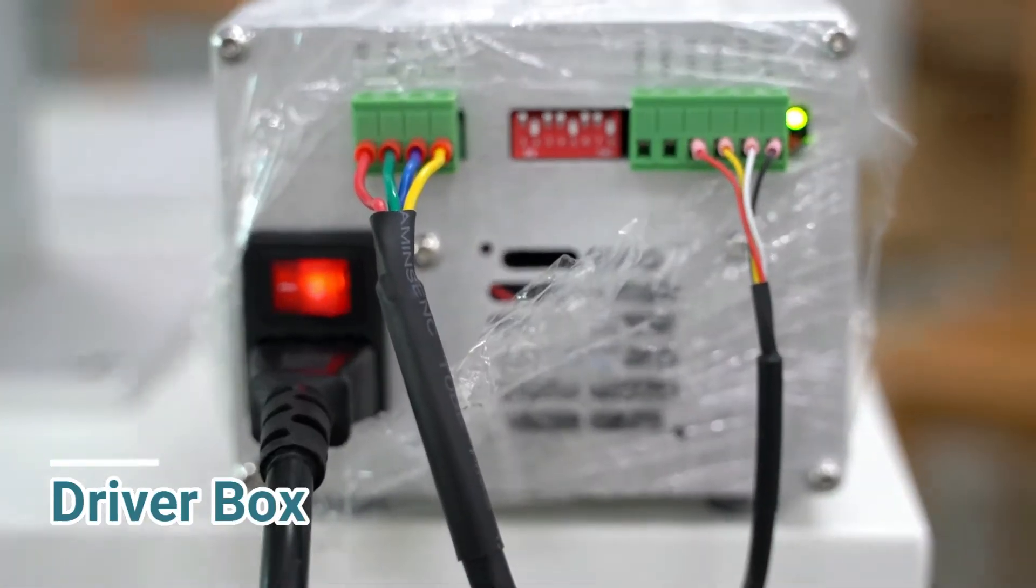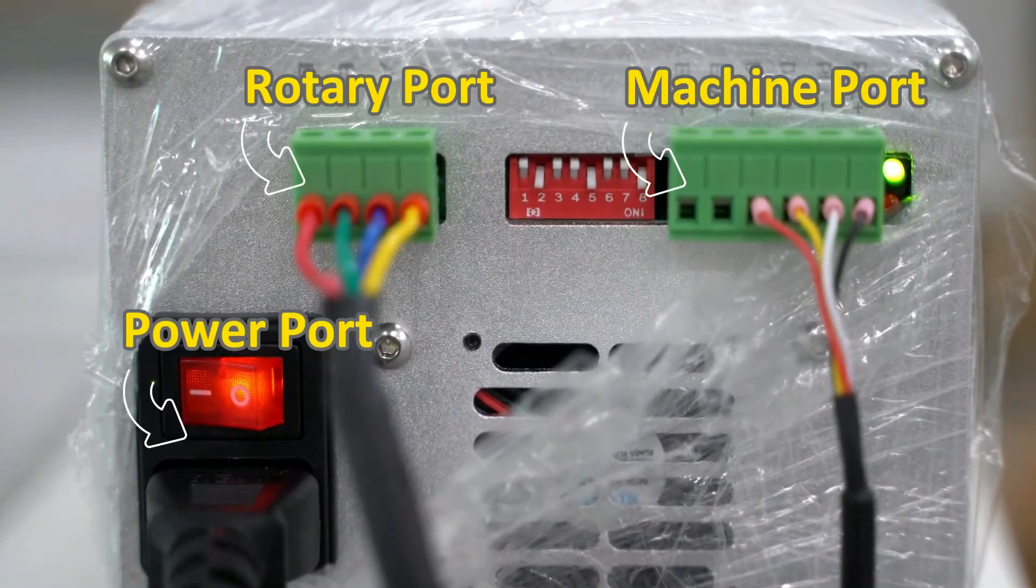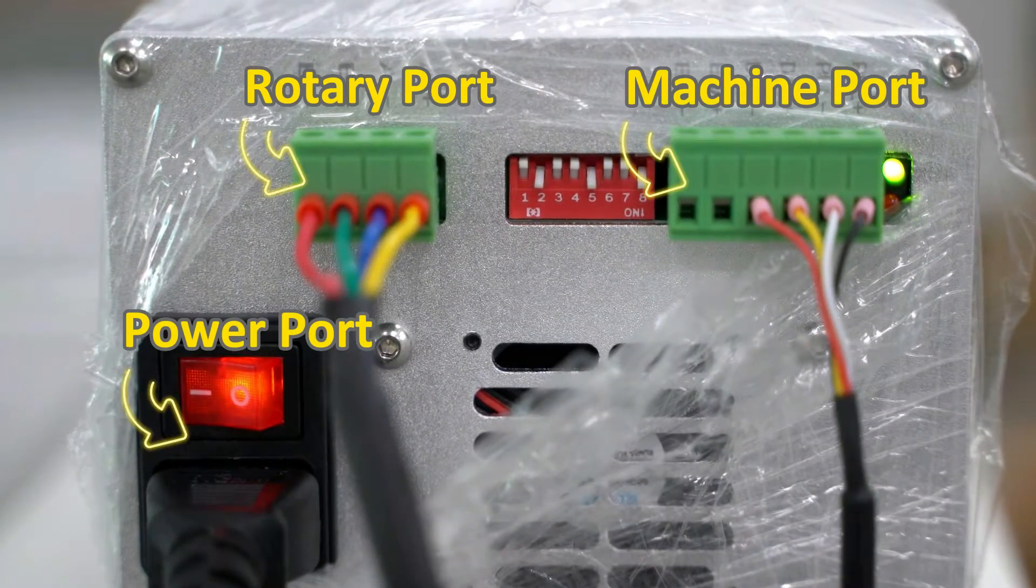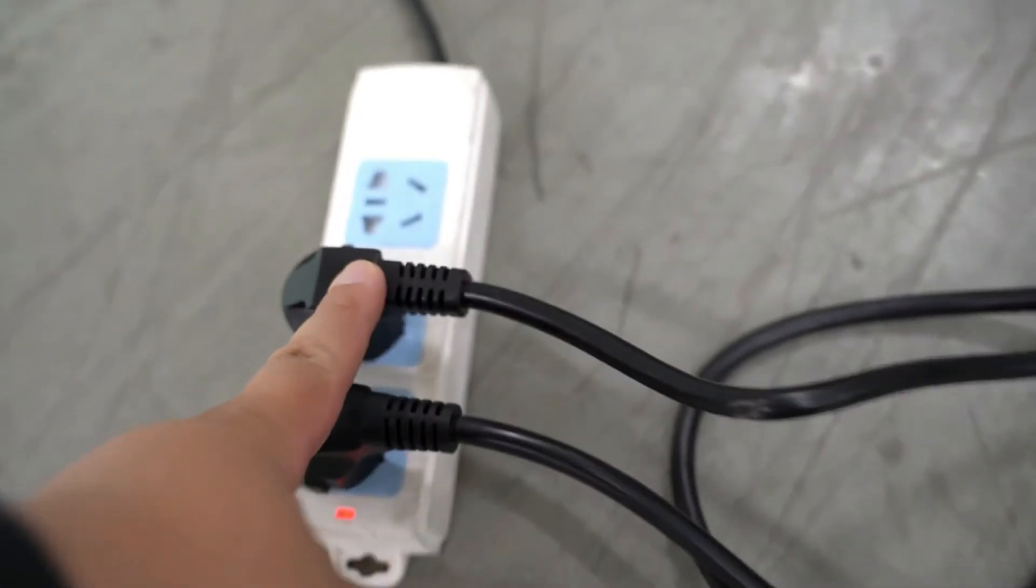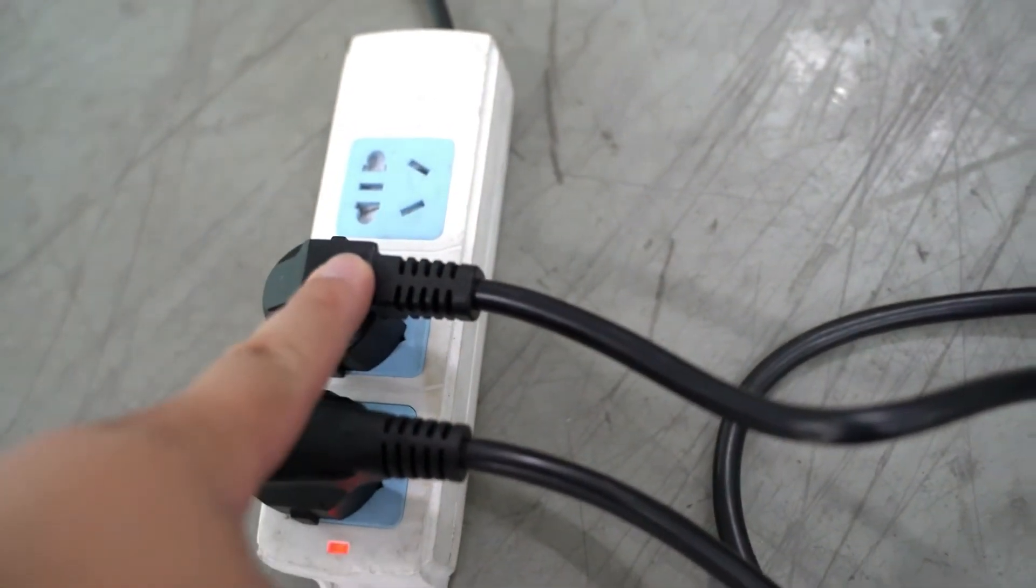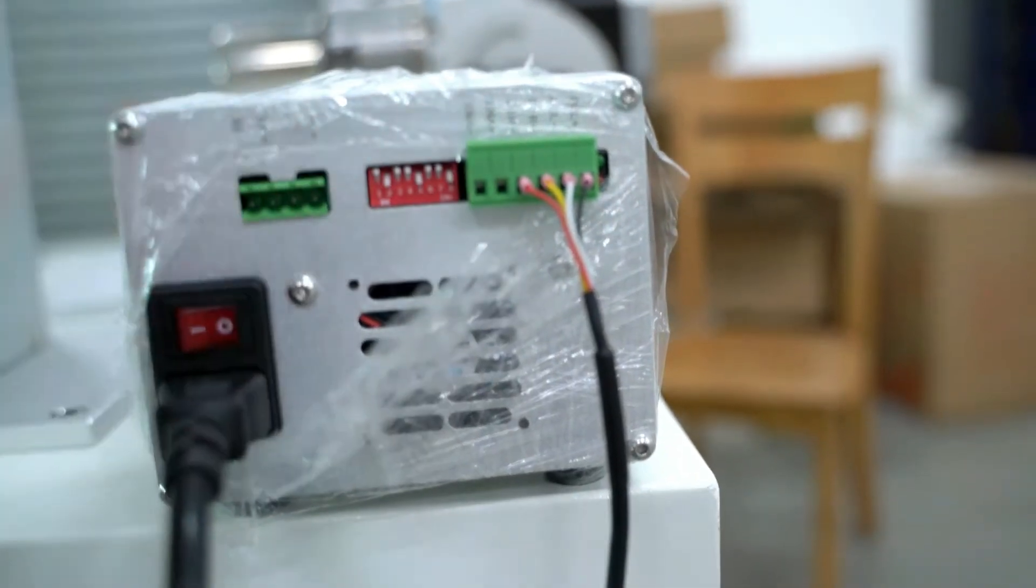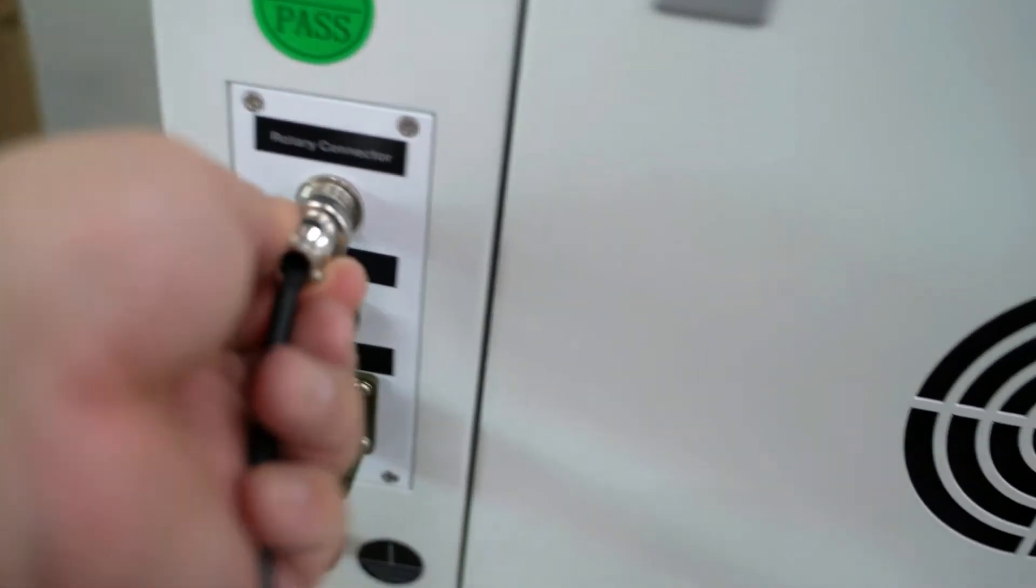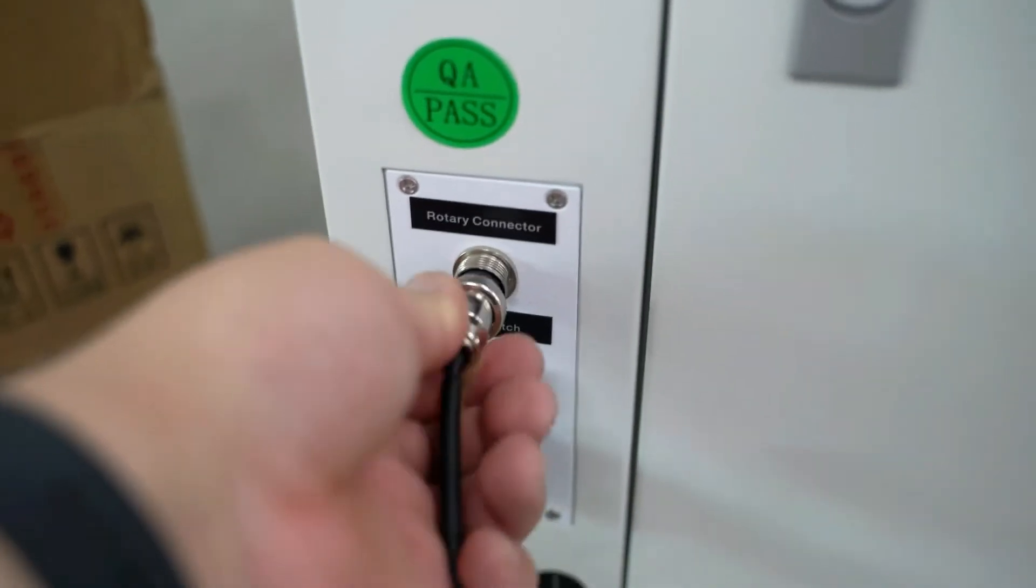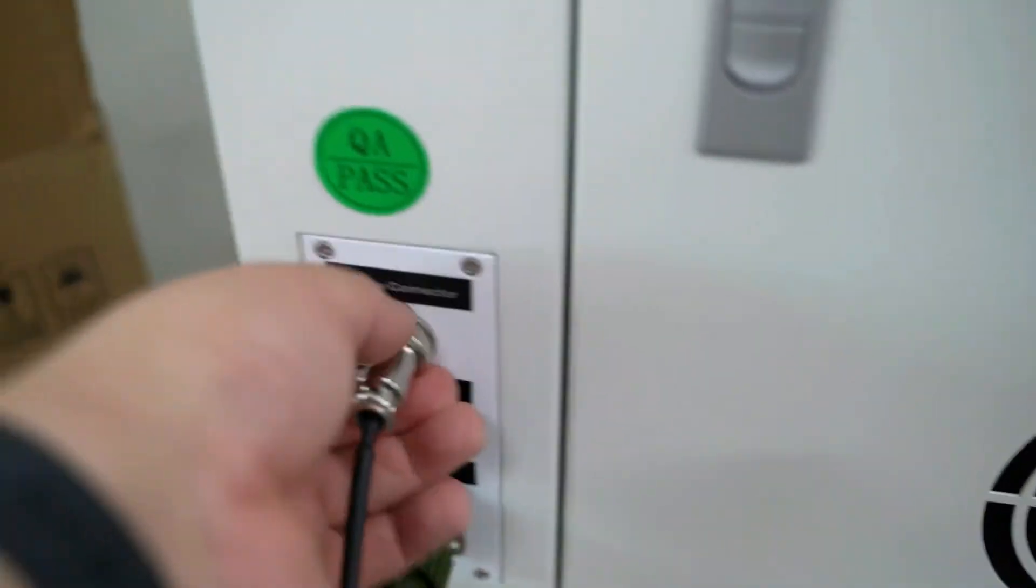We need to turn on our fiber laser marking machine before everything gets started. There are three ports on the driver box. Please connect the attached plugs with correct sockets as shown in the video. This driver box is used to transfer instructions between the rotary attachment and the fiber laser marker digitally.